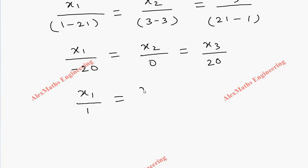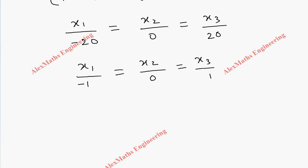So x1 over minus 20 equals x2 over 0 equals x3 over 20. Taking minus 20 common gives the ratio as 1, 0, minus 1. Therefore the eigenvector corresponding to lambda equals minus 2 is X1 equals [minus 1, 0, 1].